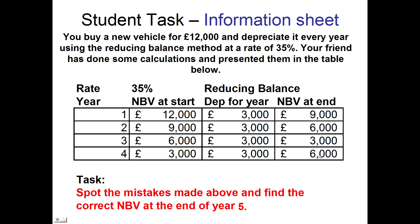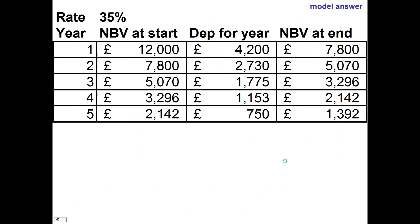Here is the solution, and I'll show you the end of year five as well. The net book values will change given that the depreciation is going to change. Year one: NBV at start is 12,000. The correct depreciation should be 4,200, because that's 35%. Take the depreciation away from the net book value at the start, and that gives you net book value at the end: 7,800. Then bring down 7,800 to year two and find the depreciation — 35% of 7,800 — to give you 5,070 at the end of year two.